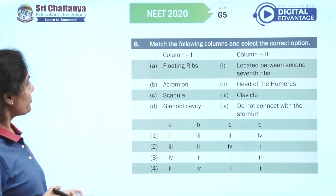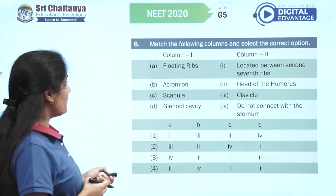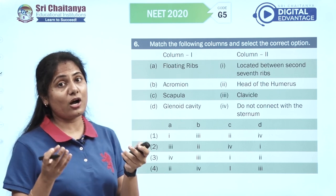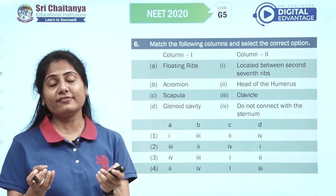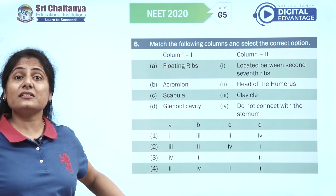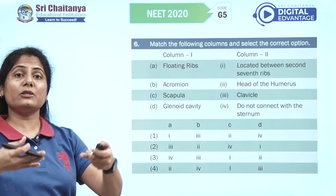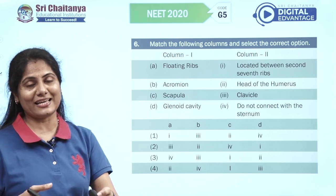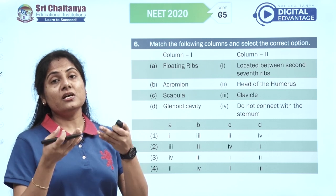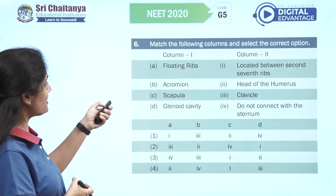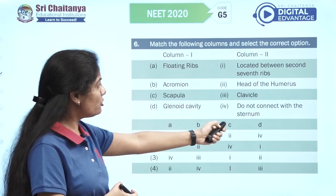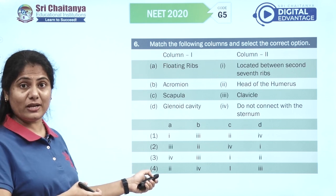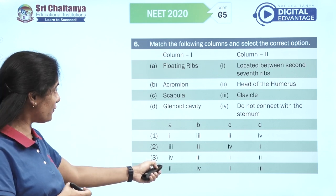Another match-the-following: floating ribs. Recall, it is the 11th and 12th pair of ribs which start from the vertebral column and are freely floating — they do not attach to the sternum. Again, we have only one option with that, which is three.